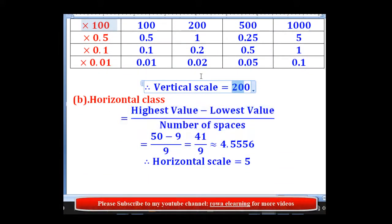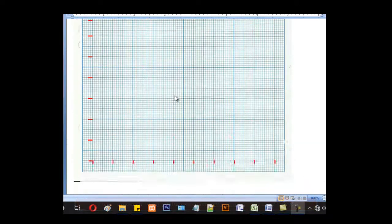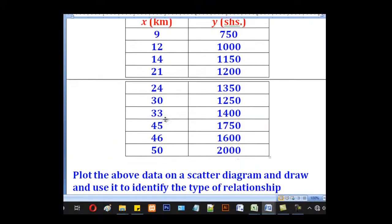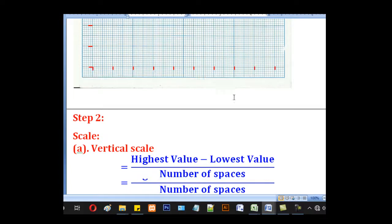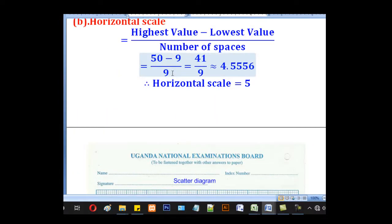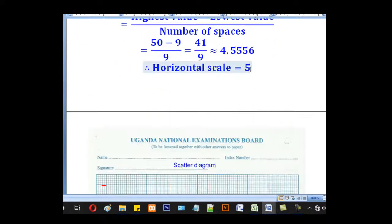For the horizontal scale, we shall still use the same formula. Highest value minus lowest value divided by the number of spaces. So in our table, the highest value is 50, and the lowest is 9. So we shall say 50 minus 9. Now the number of spaces will be 1, 2, 3, 4, 5, 6, 7, 8, 9. So we shall use 9 spaces. That is 50 minus 9 divided by 9. It gives you 4.5556. When you go back to our table of scales, from 2 we go to 5. Meaning when you use 5, it will give a suitable scale. So our suitable scale for the horizontal axis will be 5.